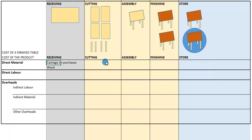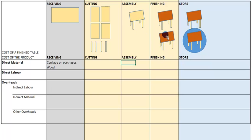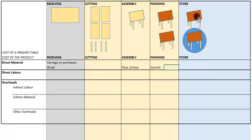A direct material is one that is actually found in the finished product. Looking at our finished table, we'll definitely have wood. In the assembly stage we may add some screws and glue to hold it together, and in the finishing stage we add some varnish for the color. All of these materials — wood, screws, glue, and varnish — actually end up in the finished product.